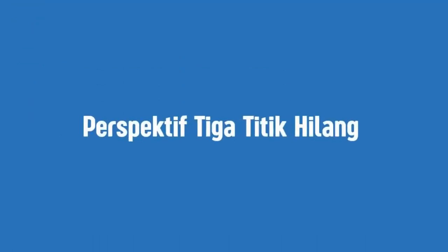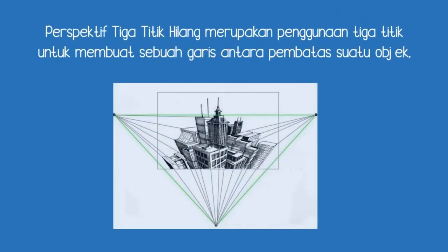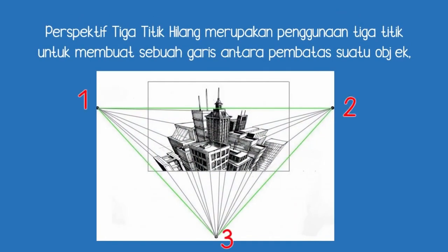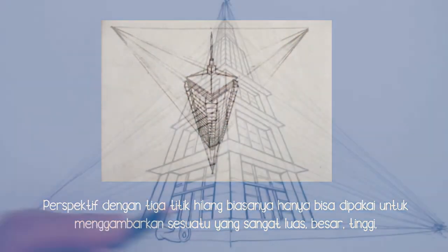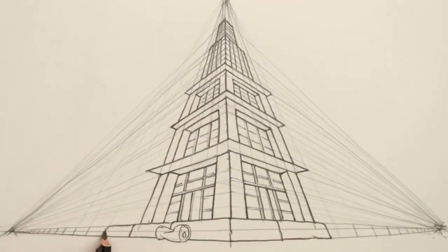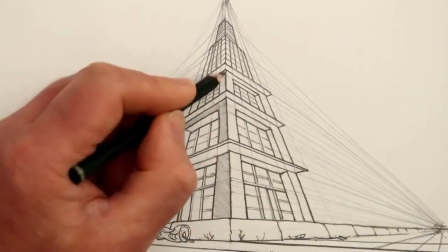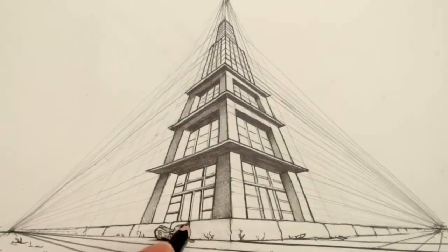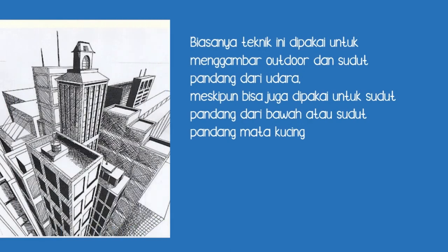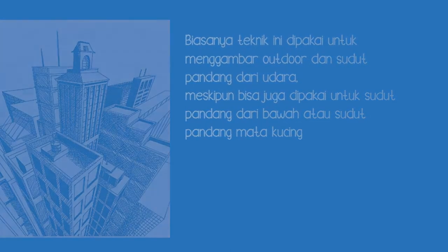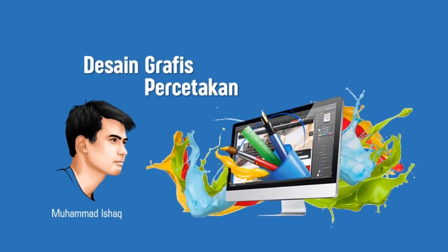Perspektif 3 titik hilang. Perspektif 3 titik hilang merupakan penggunaan 3 titik untuk membuat sebuah garis antara pembatas suatu objek. Perspektif dengan 3 titik hilang biasanya hanya bisa dipakai untuk menggambarkan sesuatu yang sangat luas, besar, dan tinggi. Biasanya teknik ini dipakai untuk menggambar outdoor dan sudut pandang dari udara, meskipun bisa juga dipakai untuk sudut pandang dari bawah atau sudut pandang mata kucing. Itulah penjelasan mengenai gambar bentuk dan gambar perspektif.